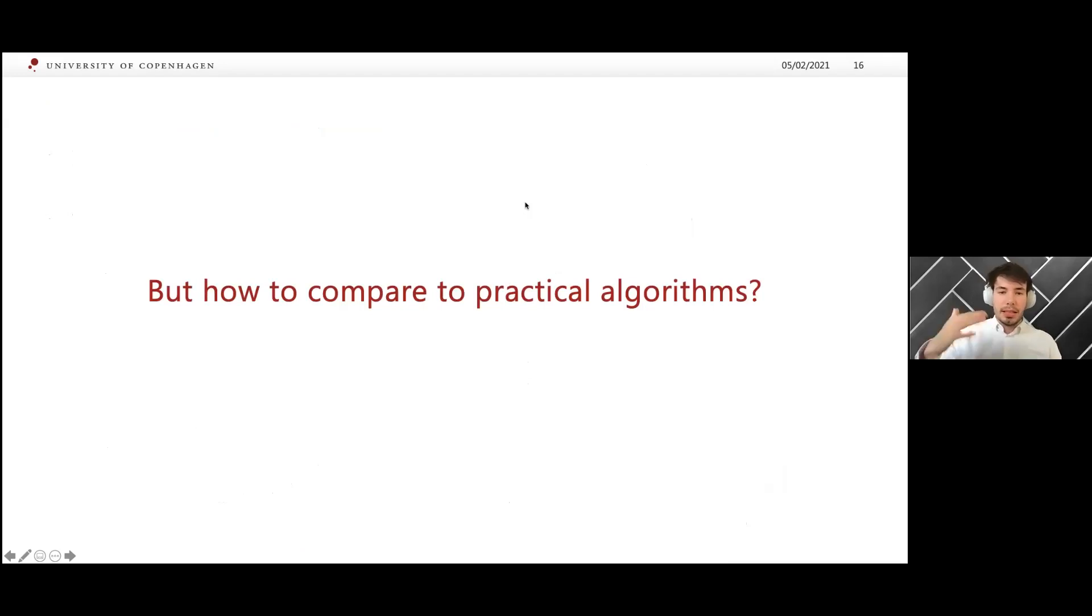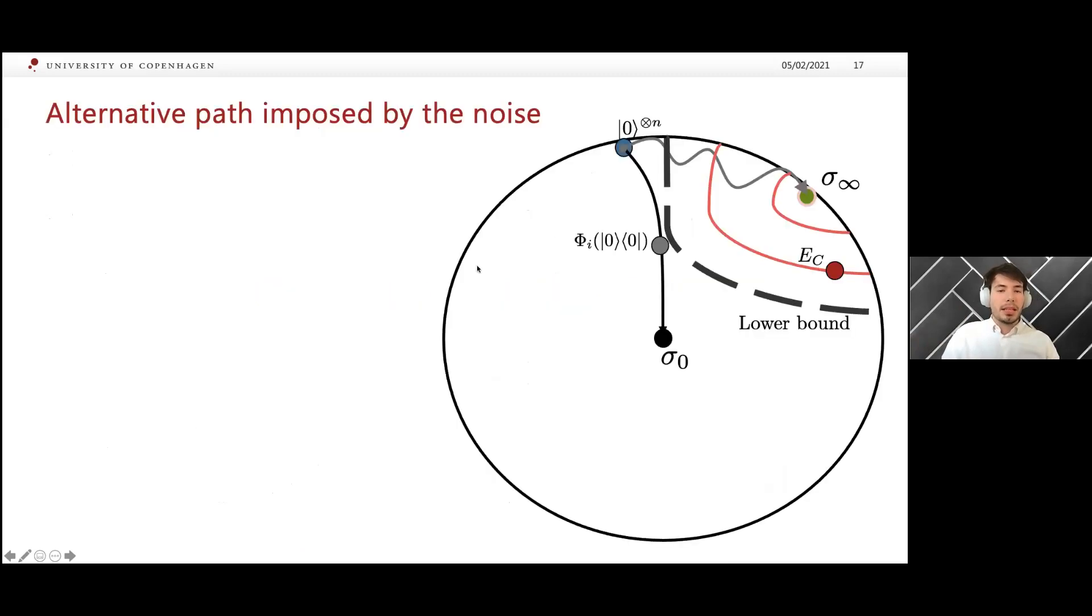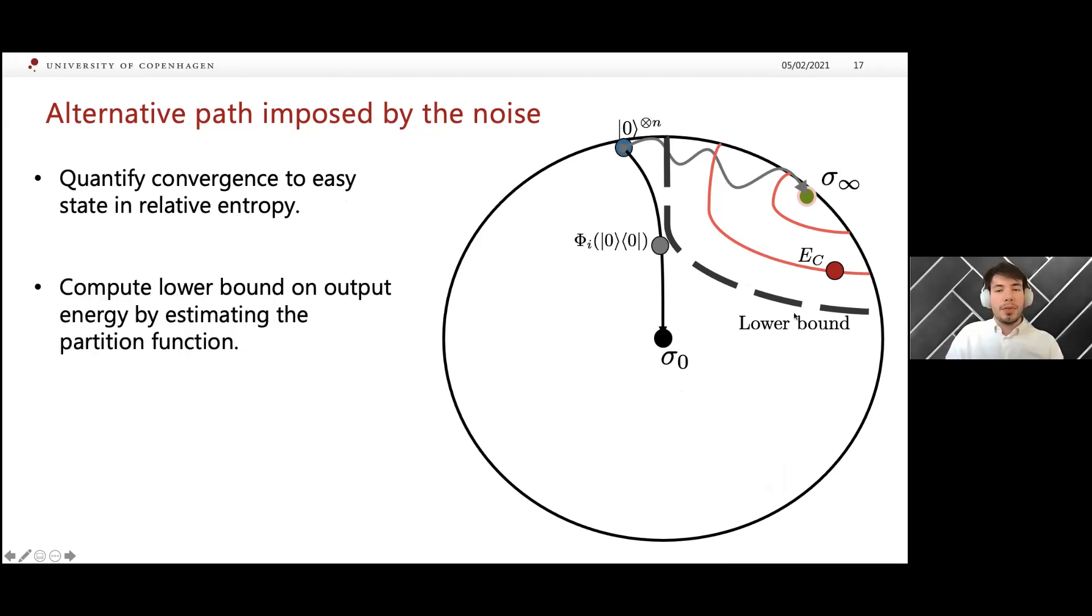But as I said before, this is the depth at which we lose advantage against this very simple algorithm, but how do we compare to practical algorithms? The technique I showed before can also be modified slightly, and then you also obtain a way of comparing to classical, of obtaining lower bounds to arbitrary classical algorithms. The whole framework is pretty similar. We start with a way of quantifying the convergence in relative entropy. This part of the picture is the same. Then instead, you can compute a lower bound on the energy by estimating the partition function of the problem combined with this relative entropy convergence method.